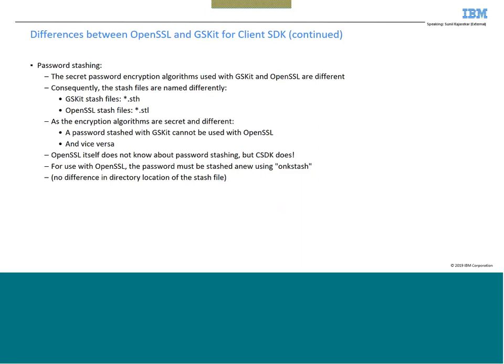A few more differences: the password encryption algorithms used with GSKit and OpenSSL are different. Consequently, the stash files are named differently — in GSKit the stash file has extension .sth, and in OpenSSL the stash file has extension .stl. So a password stash with GSKit cannot be used with OpenSSL and vice versa. The algorithms for encryption are separate and cannot be used interchangeably.